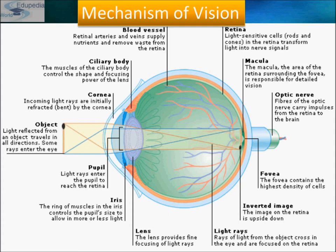Please note that the mechanism of vision — the eye works on the same principle as that of a camera. This is the object and the light reflected from it travels in all directions. Some light rays enter the eye, and the cornea initially bends them. From here some rays enter like this, they are bent by the cornea, and an inverted image is formed on the retina. The object was erect, but the image on the retina is upside down.